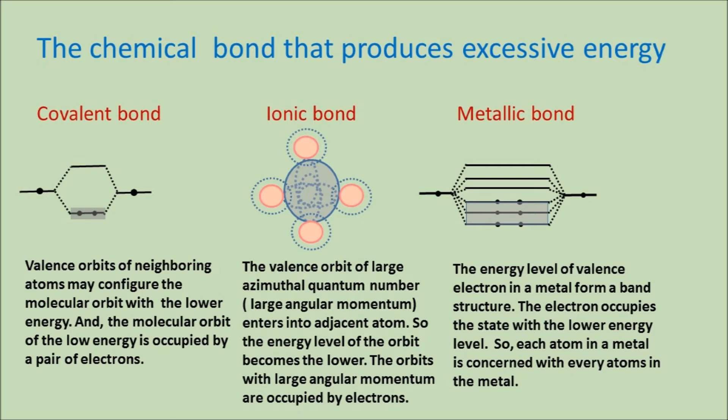The metallic bond is explained as follows: energy levels of valence electrons in a metal form a band structure. The electrons occupy the state with the lower energy level, so each atom in the metal is concerned with every other atom in the metal.